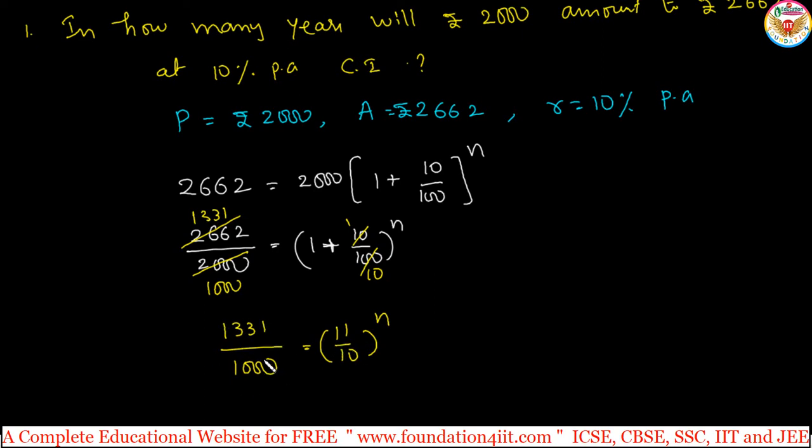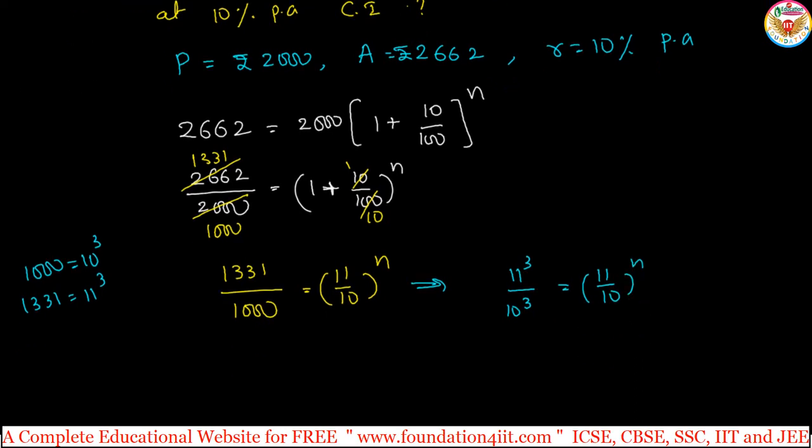LHS also should be made as 11 by 10. If you notice, 1000 is 10 cube, or 10 to the power 3. Similarly, 1331 is 11 cube. So 11 to the power 3 by 10 to the power 3 equals (11 by 10) to the power n. We can write this as (11 by 10) to the power 3 equals (11 by 10) to the power n.